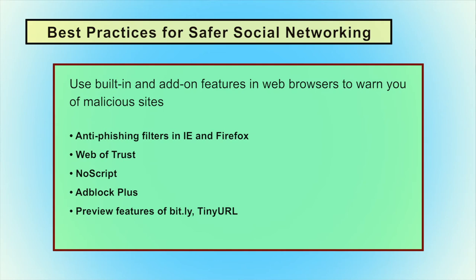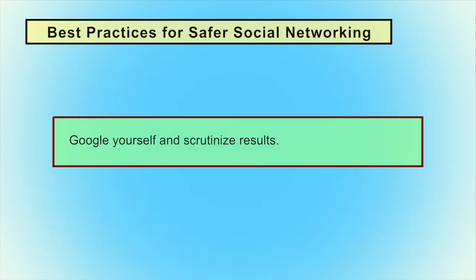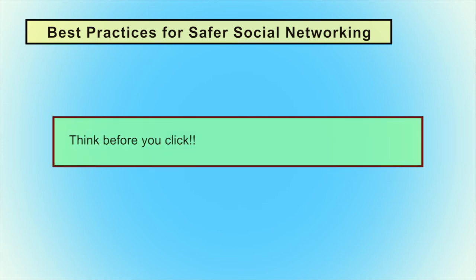Use the preview features of Bit.ly and TinyURL — if you install and enable this feature, you can see the hidden URL behind a shortened URL received in an email, message, or social network post. Trend Micro Web Reputation Service is your friend to prevent many attacks. Google yourself and scrutinize results to identify which are real and which are fake. Always think wisely before you click on anything.